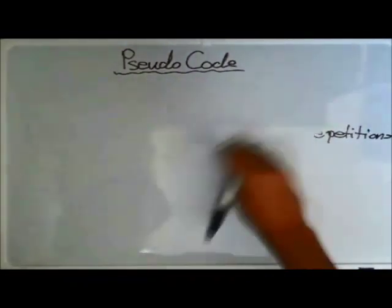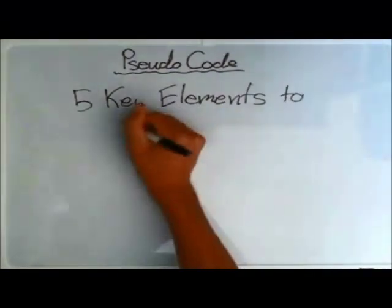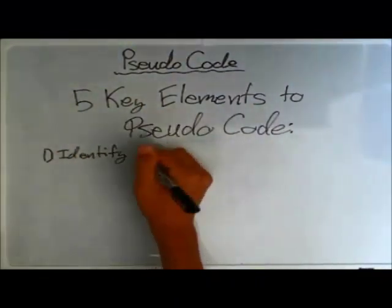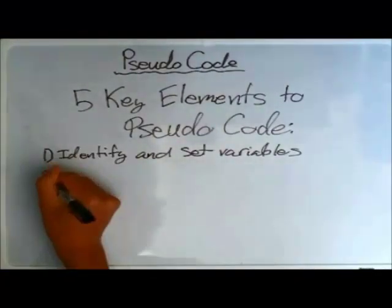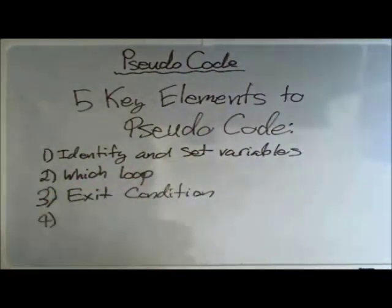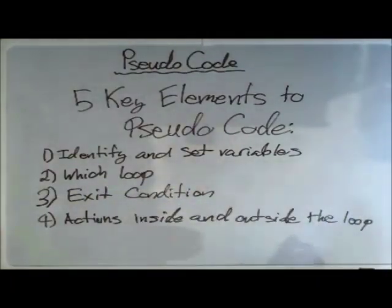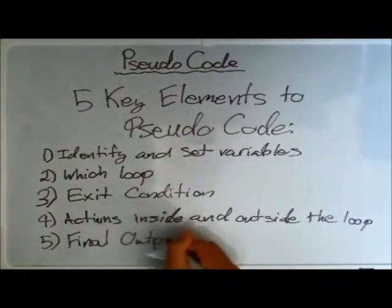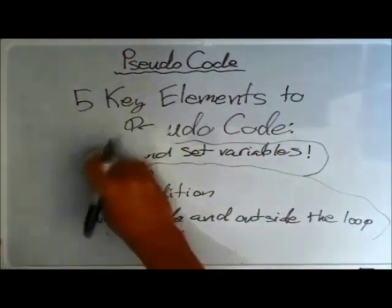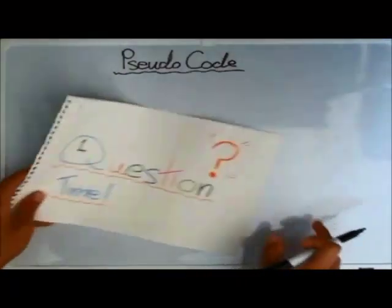Now let's look at the five key elements to writing a pseudocode. These are: one, identify and set variables; two, which loop you will be using; three, exit condition; four, actions inside and outside the loop; and five, final output — what do you want to output.